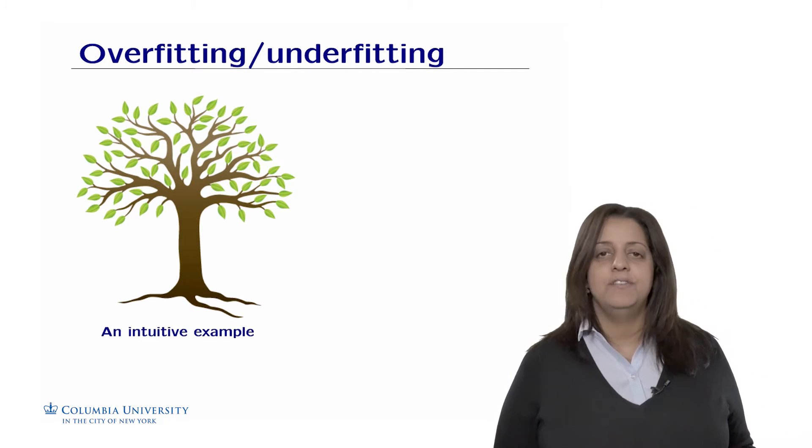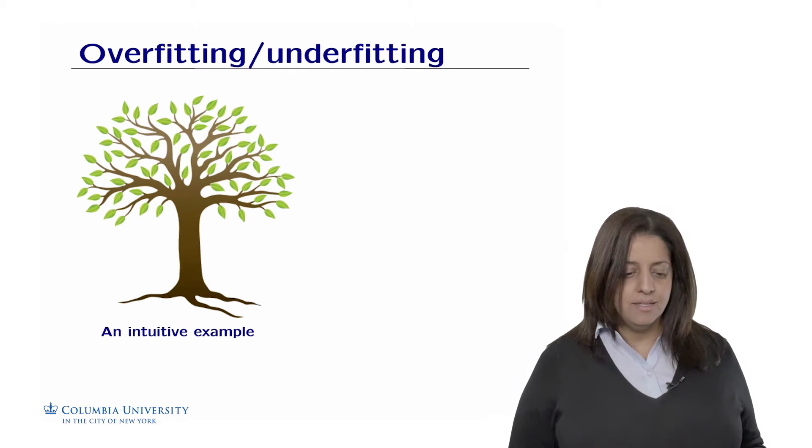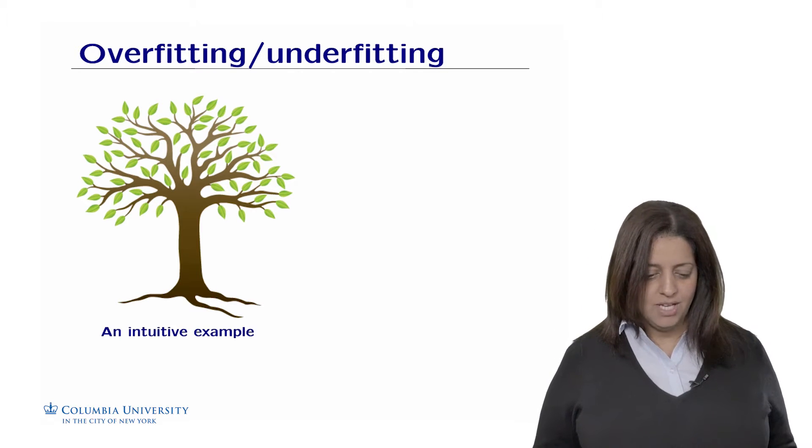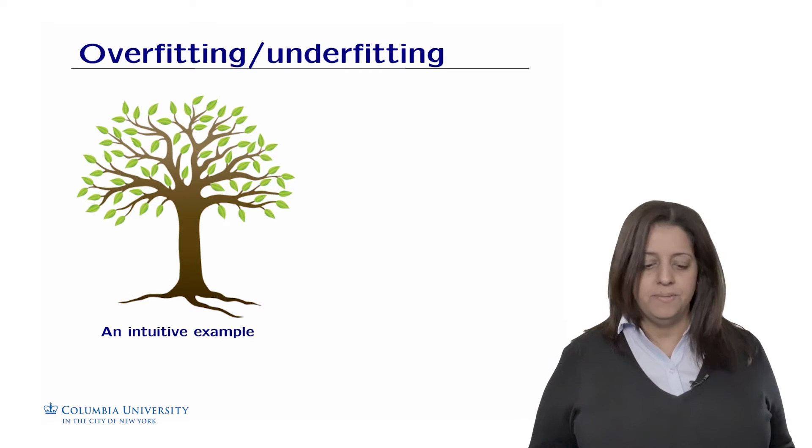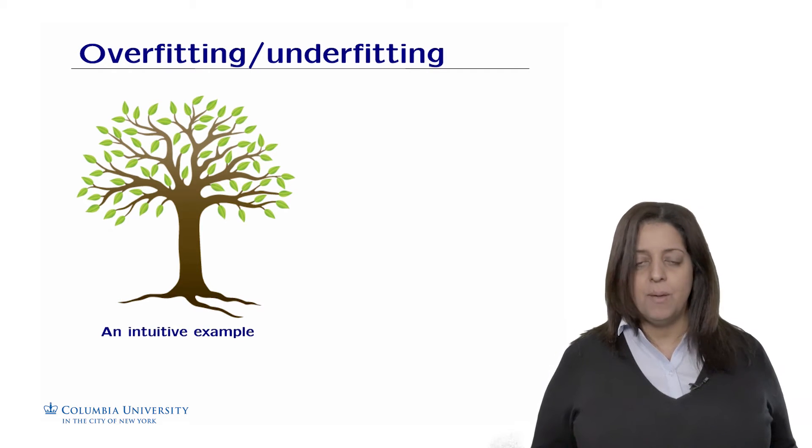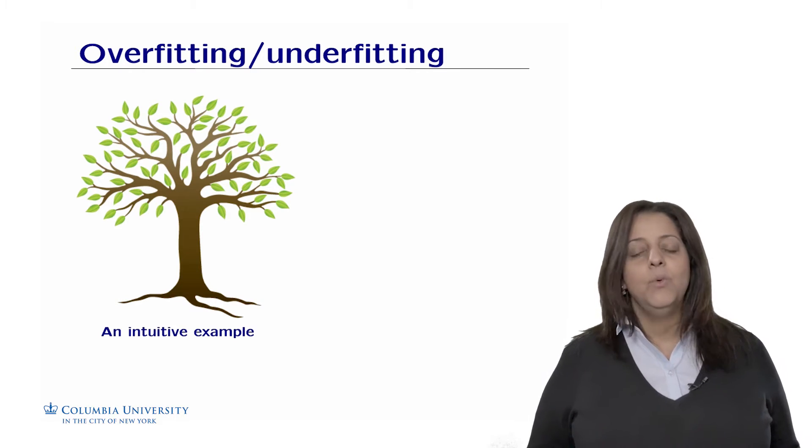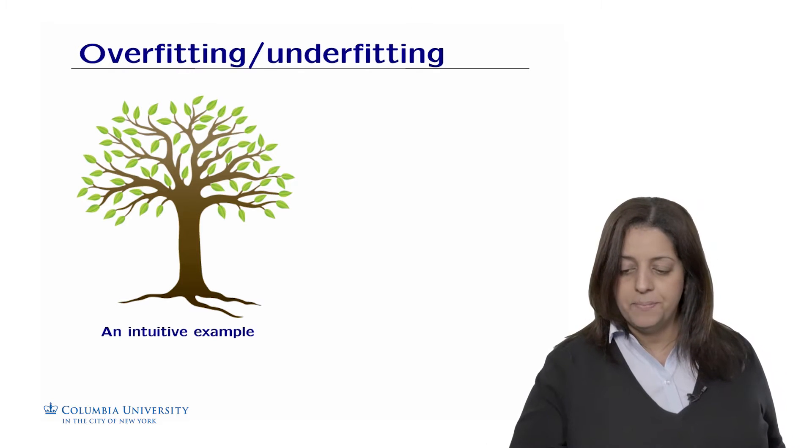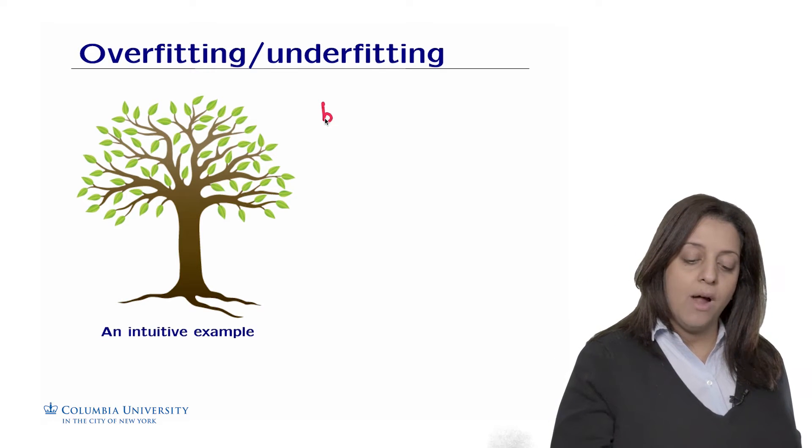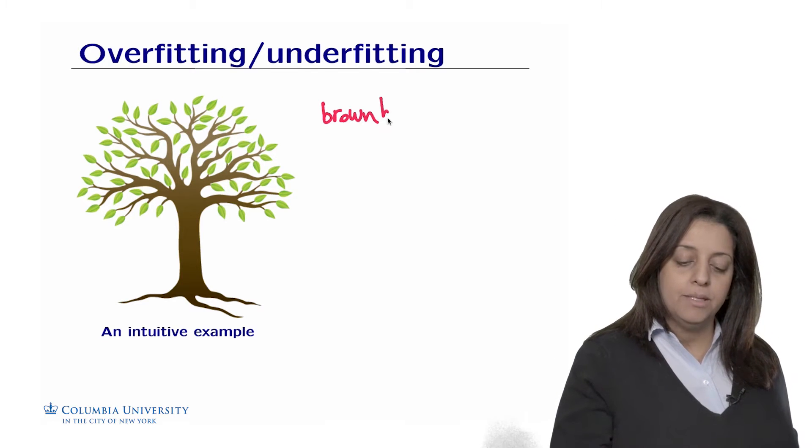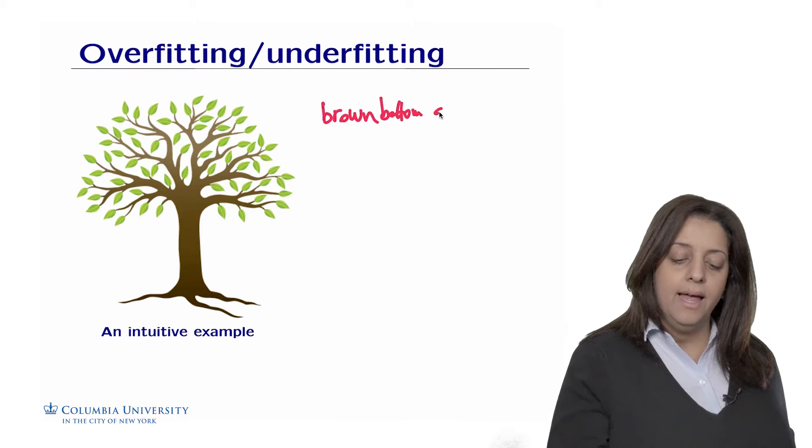So suppose we have a dataset of trees and other botanical objects like flowers, and we want to be able to learn the concept of being a tree. We could use natural language statements, sentences that tell what's a tree from what's a non-tree. An example of that, we could come up with a sentence that tells a tree has a brown bottom part and a green top.